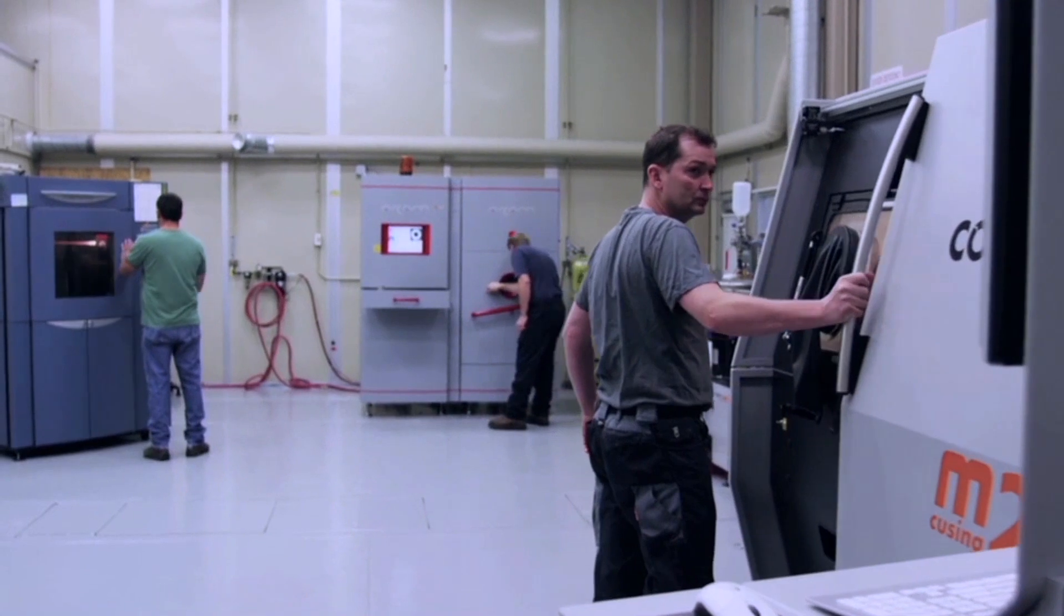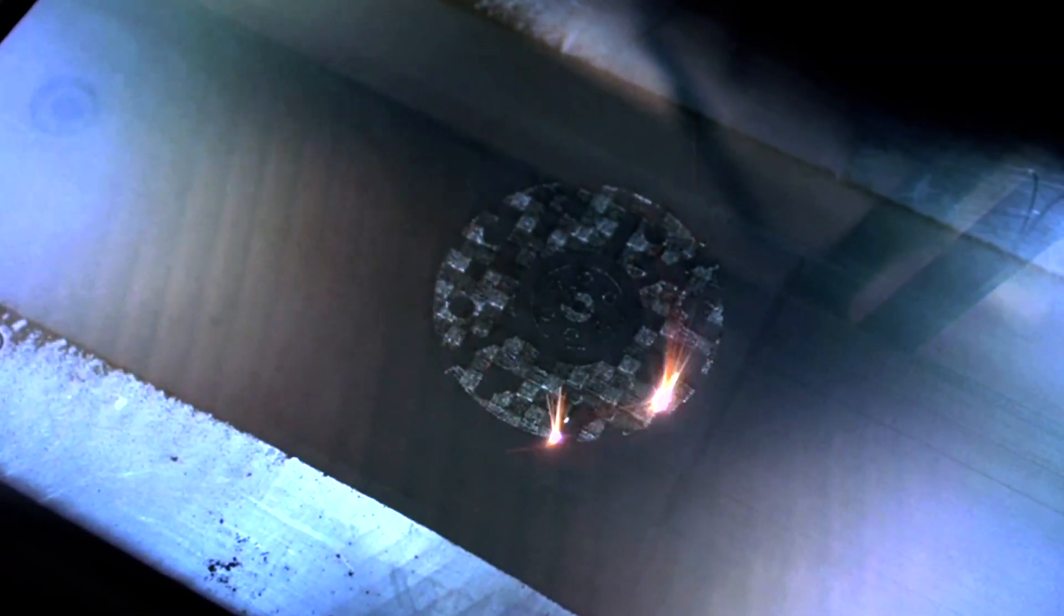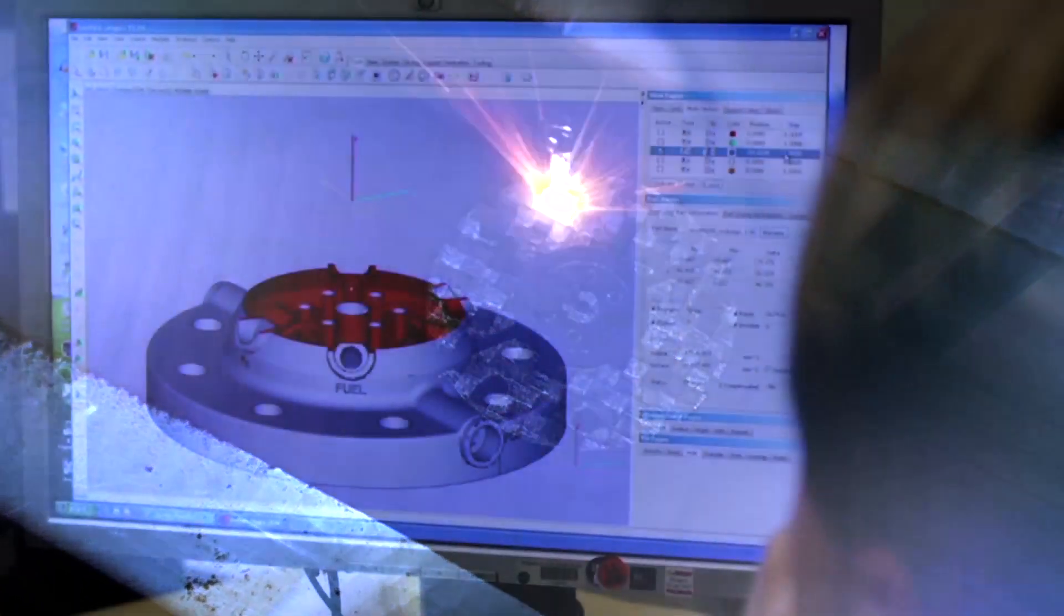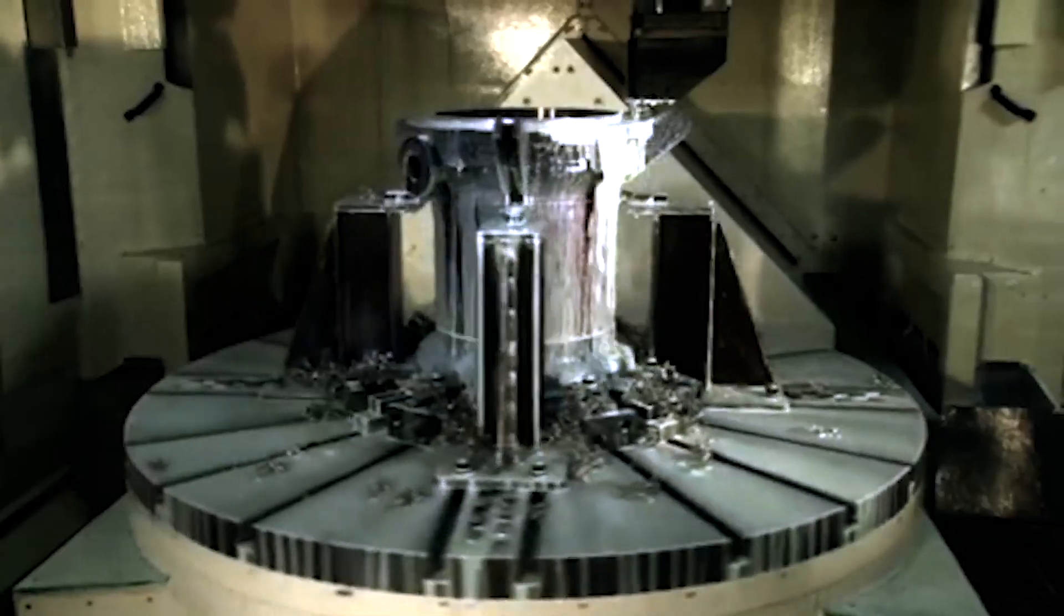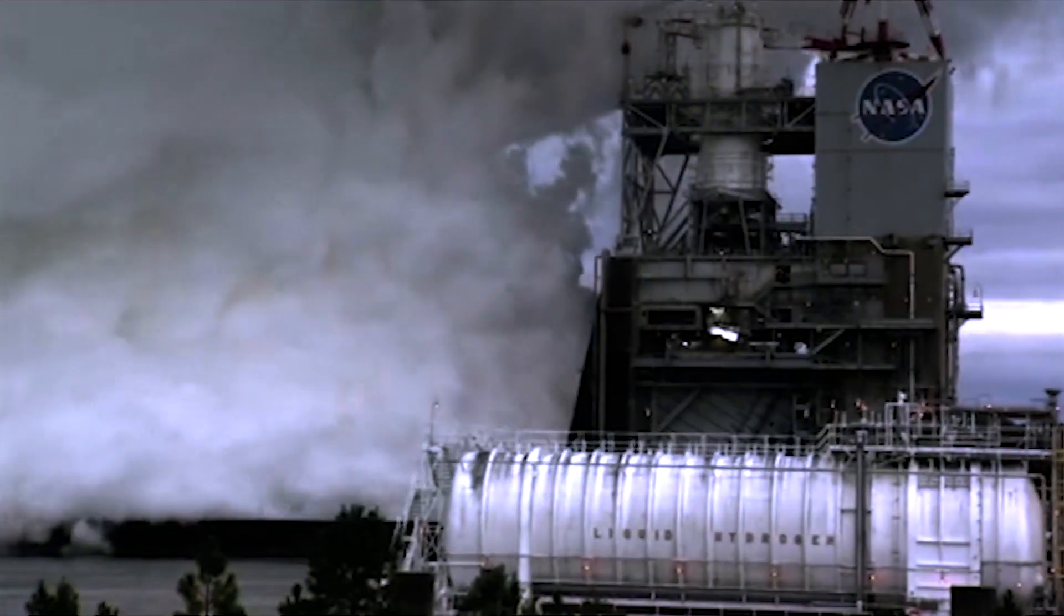NASA's using 3D printers to make repairs on space equipment. They use a process called Selective Laser Melting, or SLM, that they use to create a nickel alloy to repair everything like the J-2 rocket engine.